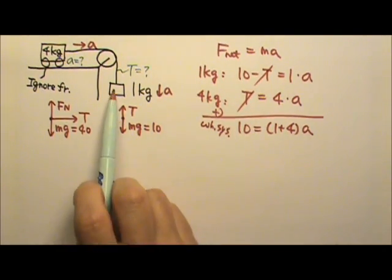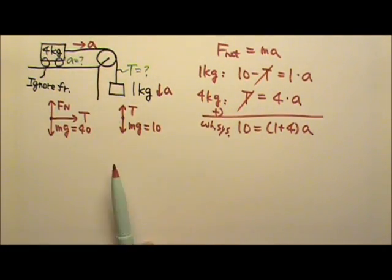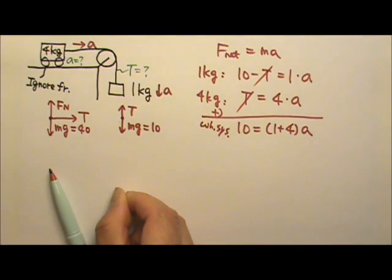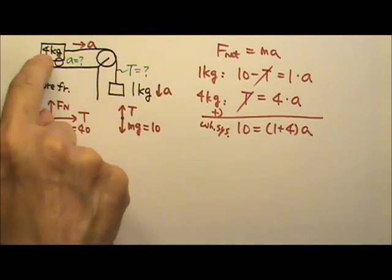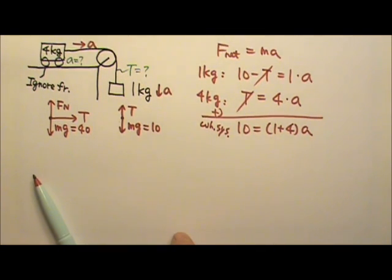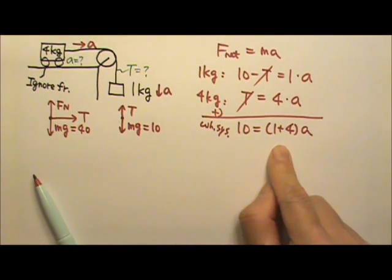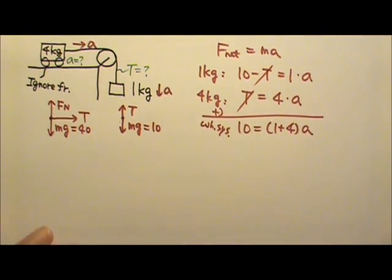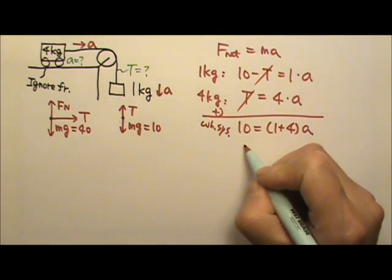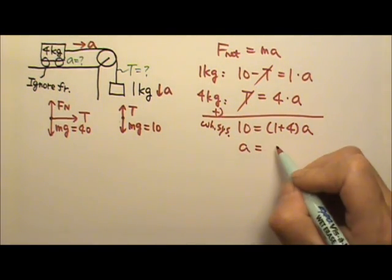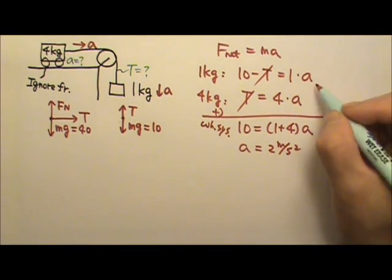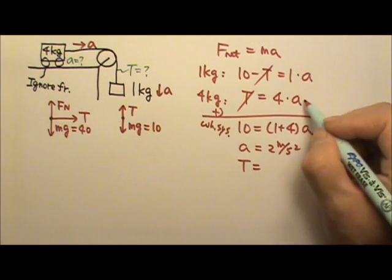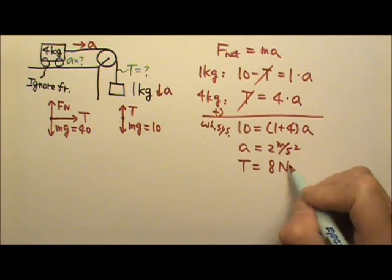So if you had to look at the whole system, you would only have 10 N pulling this way, 10 N pulling on 5 kg. So that's the whole system equation. So the acceleration would be 2. You plug it back into either of those two equations, you will get the tension that's 8 N.